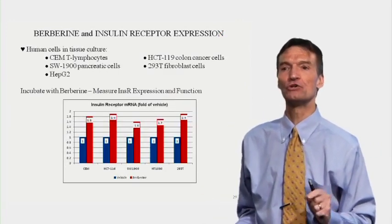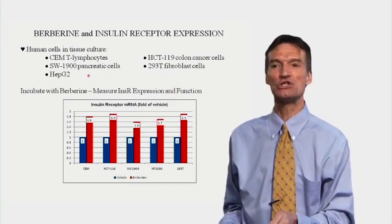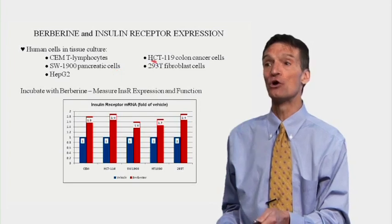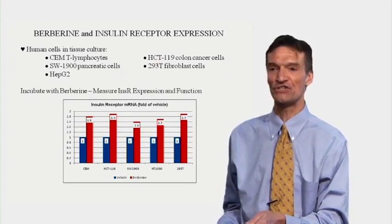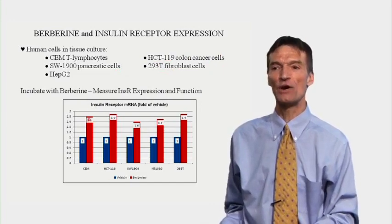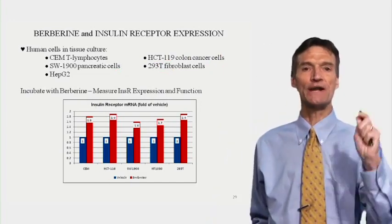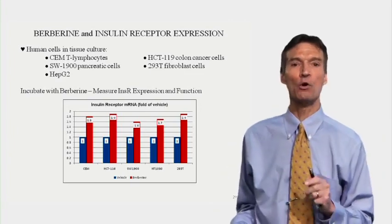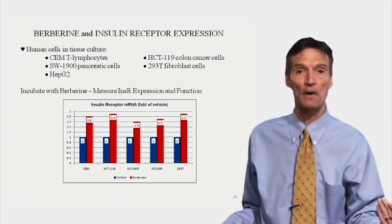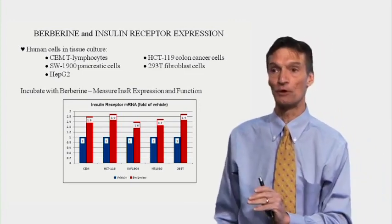Looking at a variety of different human cells — not just HepG2 cells, but lymphocytes, pancreatic cells, colon cancer cells, and fibroblast cells — all upregulate expression of the insulin receptor when incubated with berberine. It appears that every cell in the body will respond to berberine by making more insulin receptors. So every organ in the body will exhibit enhanced insulin sensitivity with berberine.